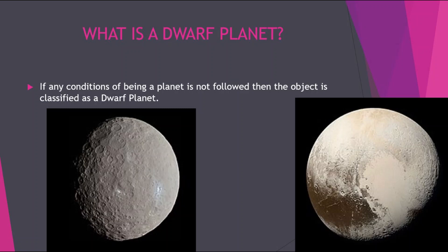But actually there are eight planets in the solar system now. Pluto was removed from the planet category because it followed the first two conditions — orbiting the sun and having sufficient mass to have a round shape —